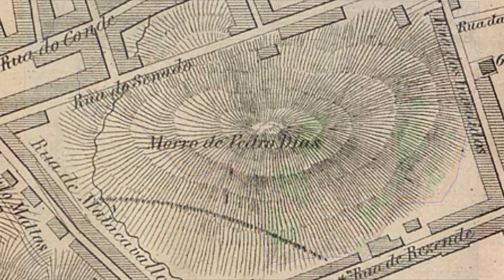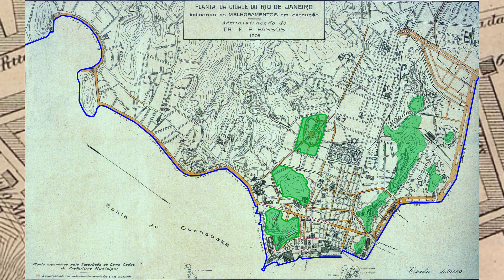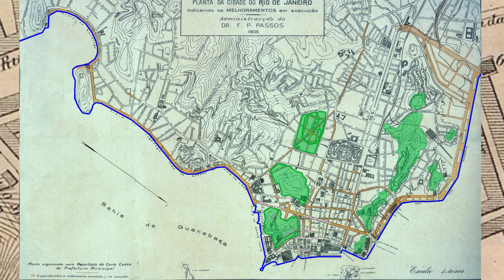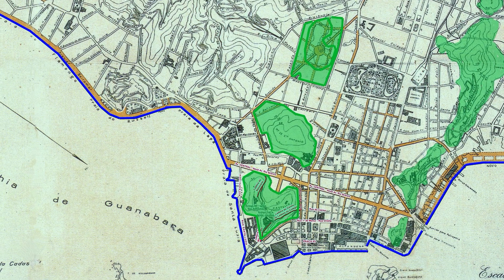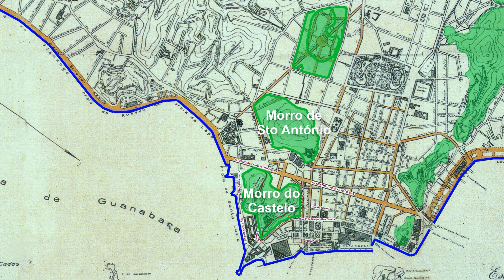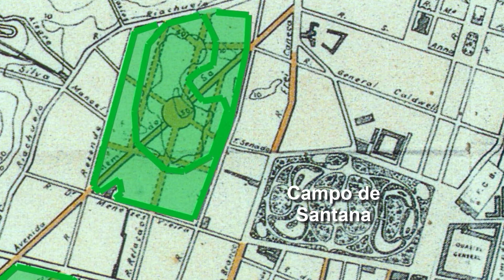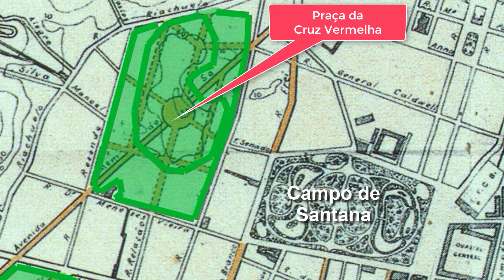Next, we'll see a plan from the Administrator Pereira Passos, from 1905, where the three morros appear: Castelo, Santo Antônio, and Morro do Senado. In this plan, marked in green, we see the area of Morro do Senado and the new streets that were drawn there, including the Praça da Cruz Vermelha.